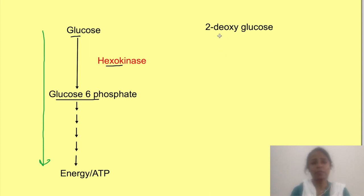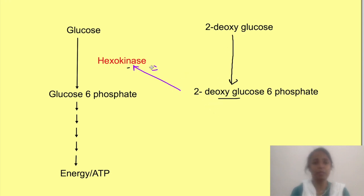So when this drug enters into the cell it also gets converted to 2-deoxyglucose 6-phosphate by the same enzyme. However once this chemical is produced it blocks the enzymes of this pathway. So the pathway cannot proceed further.